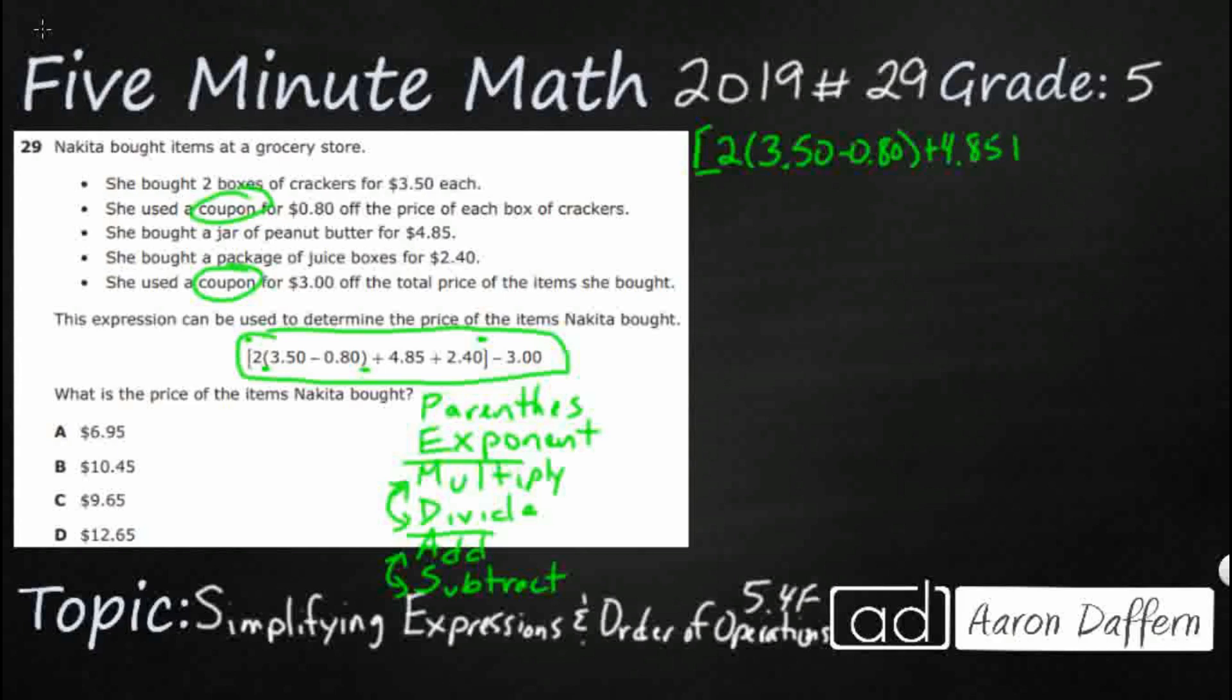We're going to add the 2.40. And then after all of that, we're going to subtract 3. And that minus 3 is going to be the very last thing we do because it's outside of these brackets. So this bracket right here is going to be our first set of parentheses. So we're going to do whatever's inside of that first.